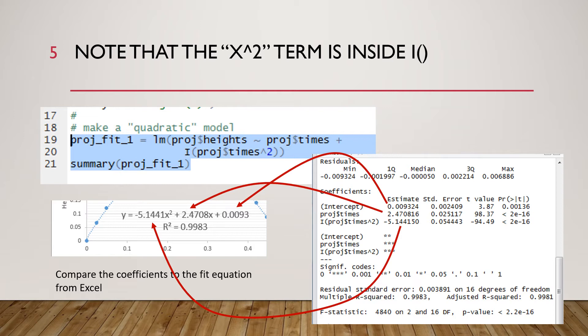We have the y proj dollar sign heights tilde the x first set of x's proj dollar sign times and then there's a second set of x's which are specified by this I parenthesis and then proj dollar sign times squared, and that will give us the second order polynomial.